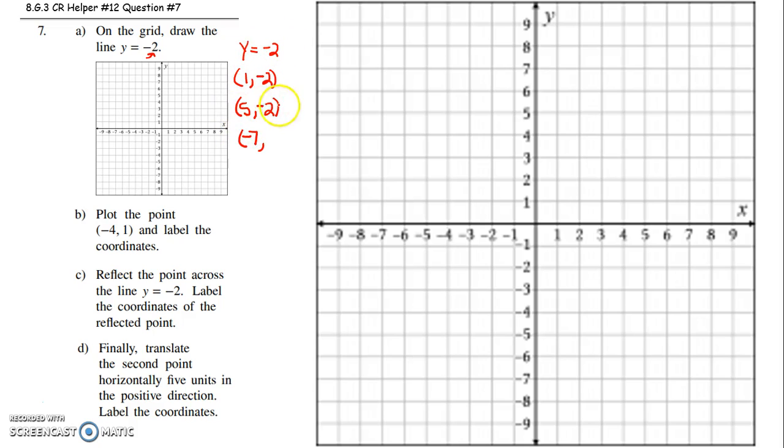I could start with negative 7. Negative 7 what? Negative 7, negative 2. So if you have a hard time visualizing what the line y equals negative 2 will look like, just plot some points on that line.